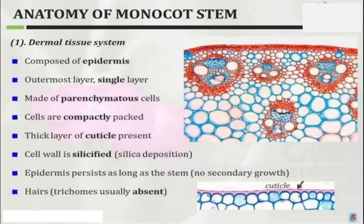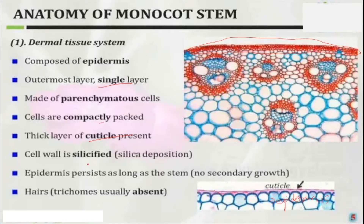The outermost layer is the epidermis — a single layer made up of parenchyma cells with thick cuticles and no intercellular space. Endodermis is present and persists for a long time. There is no secondary growth, and multicellular hairs are absent because it is a stem.